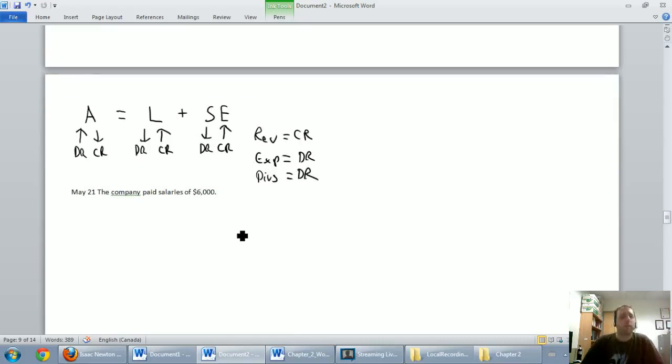Let's carry on. May 21st, the company paid salaries of $6,000. Is cash involved here? Yes. Always ask yourself that question because it makes the journal entry easy. Is cash involved? Yes. Is cash going up? No. Cash is going down. Cash is an asset. We've got an asset going down. Let's credit cash. I'll leave room for the debit. Credit cash, $6,000.